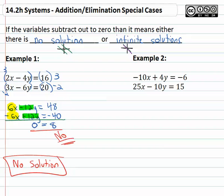Let's try another example. In example two, negative 10x plus 4y equals negative 6 and 25x minus 10y equals 15. This time let's get opposites in front of the y's. To get opposites in front of y's the common multiple is going to be 20.